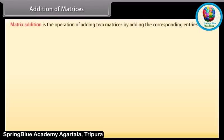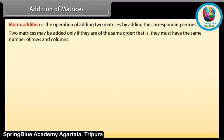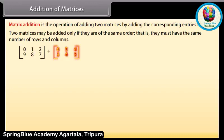Addition of matrices. Matrix addition is the operation of adding two matrices by adding the corresponding entries together. Two matrices may be added only if they are of the same order, i.e., they must have the same number of rows and columns. Let's add these matrices.